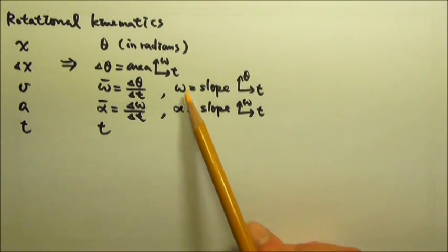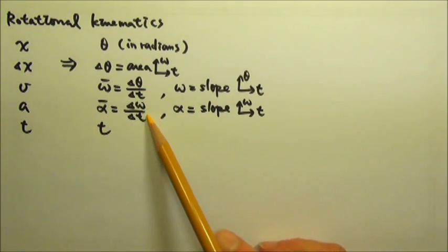The instantaneous values are also averages. They're just averages taken over a very short amount of time.